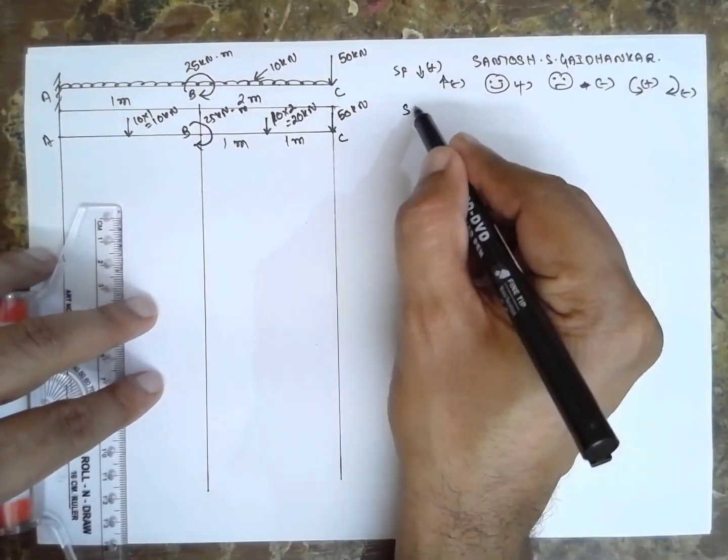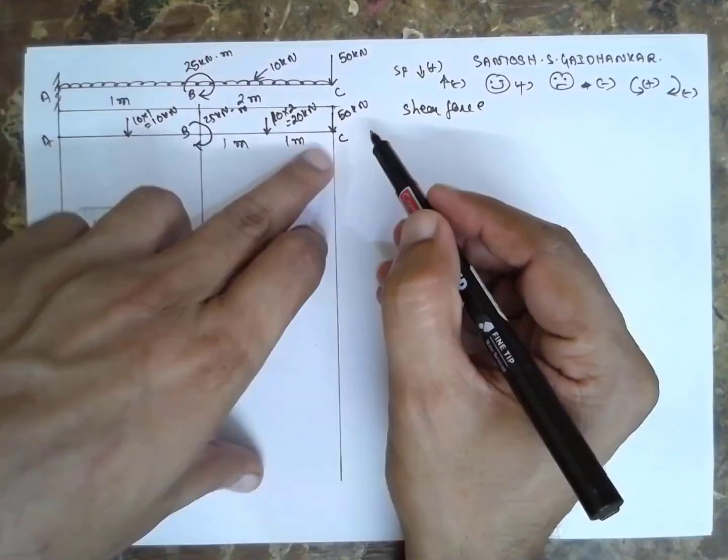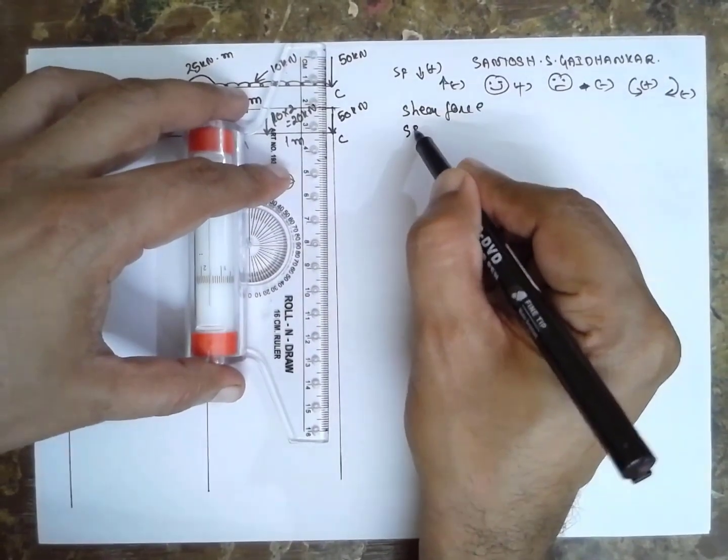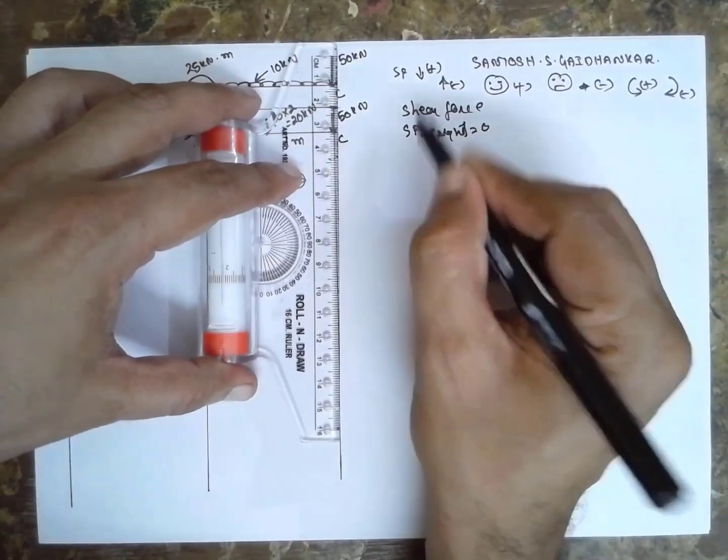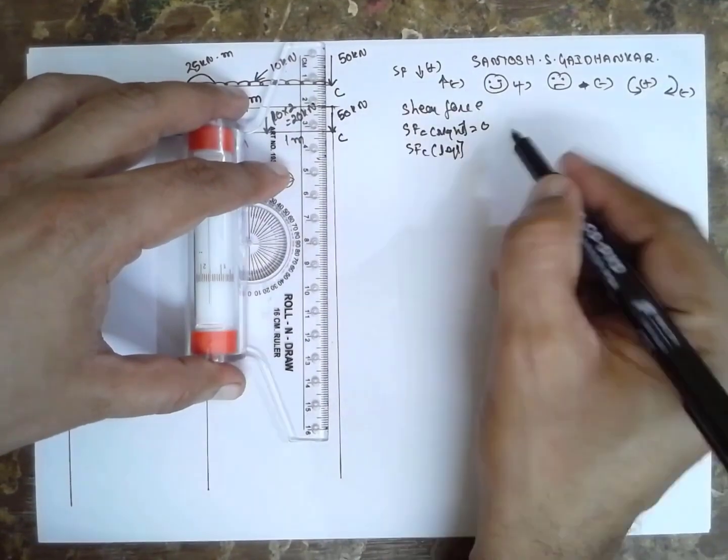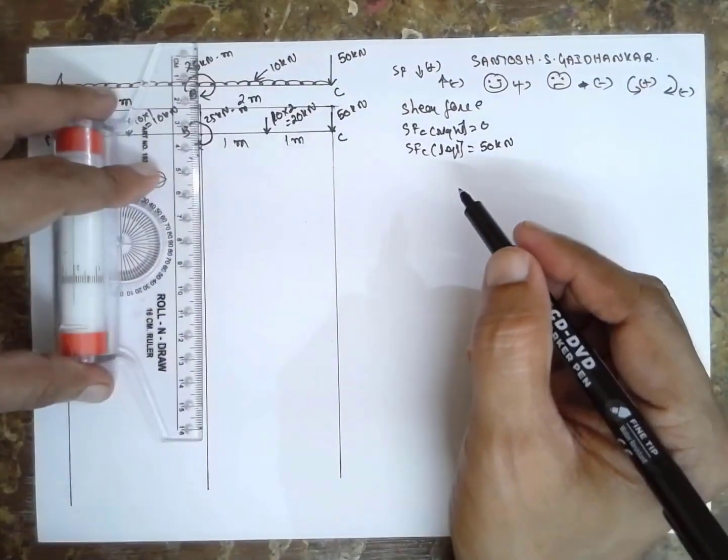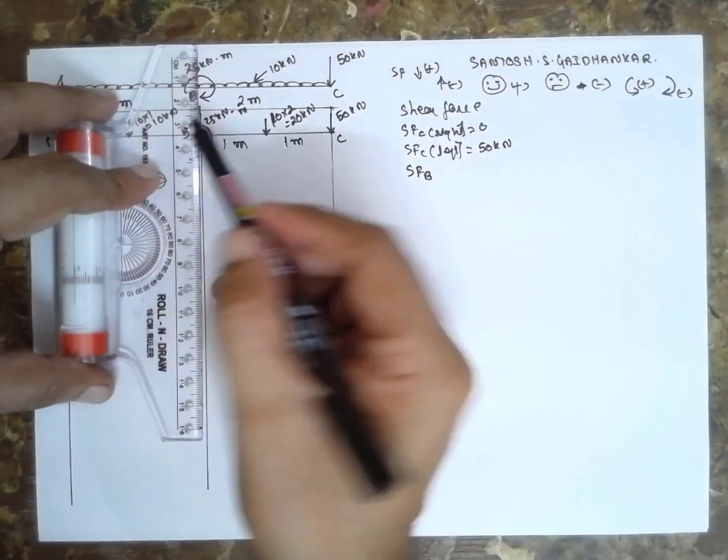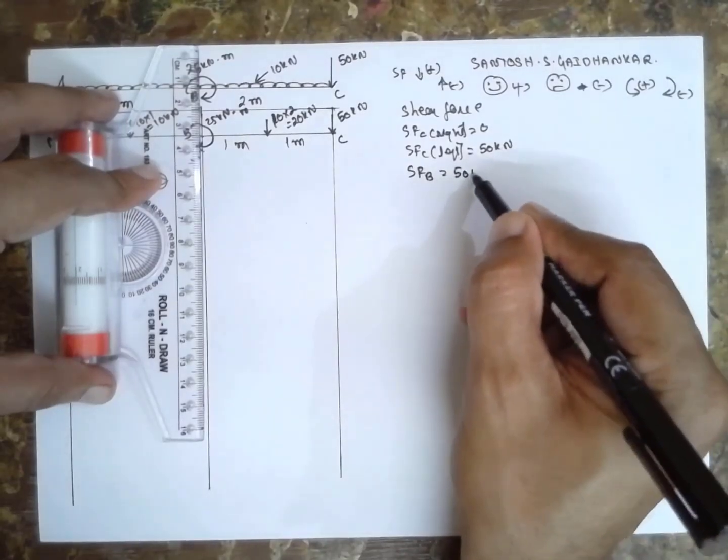Now for shear force, at C there is a load acting, so I will consider right and left. SF at C right is 0, there is no load. SF at C left, acting downward, is 50 kN. Next at B, because there is no load, there is a couple. The couple doesn't affect shear force. Therefore, the previous value is 50 kN.